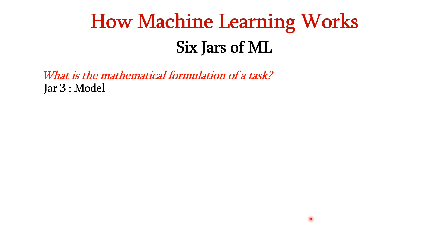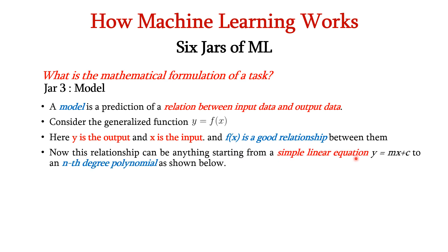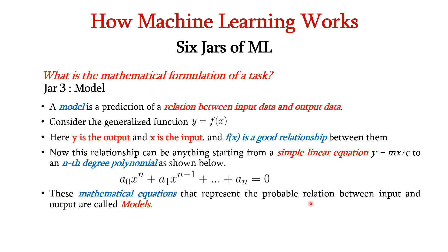Now, we have data and identify the task. Next, we have to model the task. That is the purpose of jar 3. A model is a prediction of a relation between input data and output data. For example, consider this function y = f(x) where y is the output, x is the input and f(x) depicts the good relationship between them. This relationship can be anything from simple linear equation y = mx + c to nth degree polynomial as mentioned here. The mathematical equations that represent the probable relationship that exists between the input and output are called models.